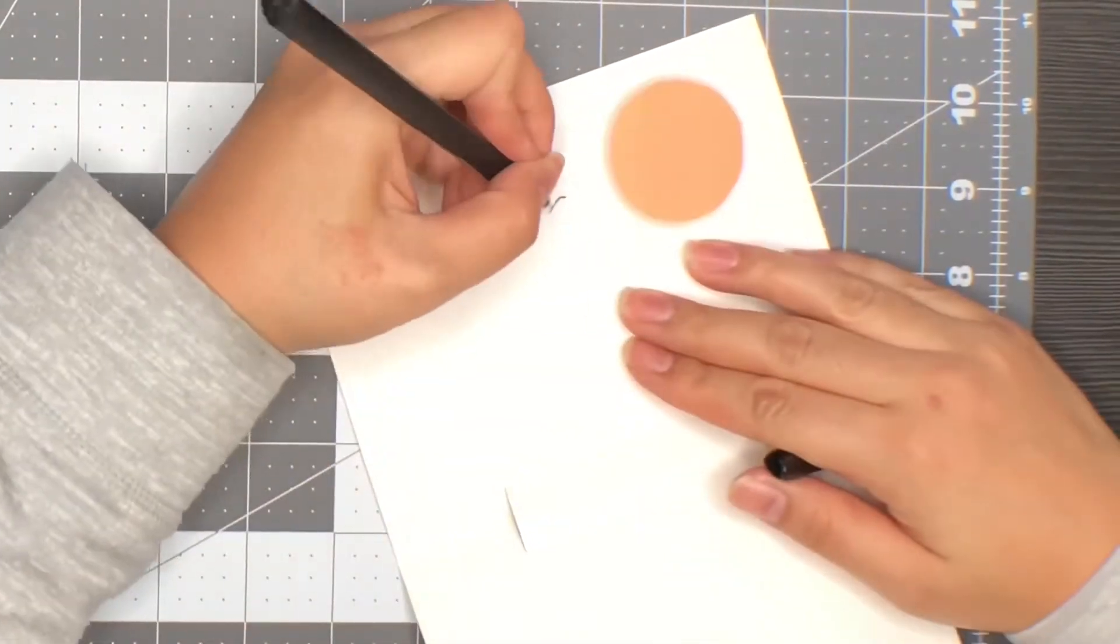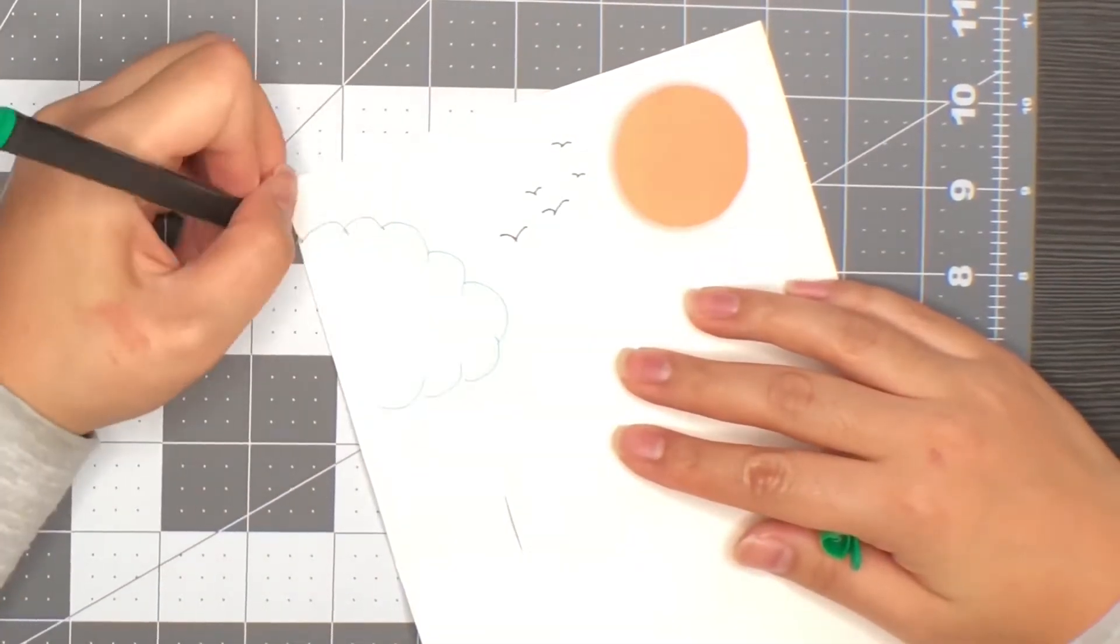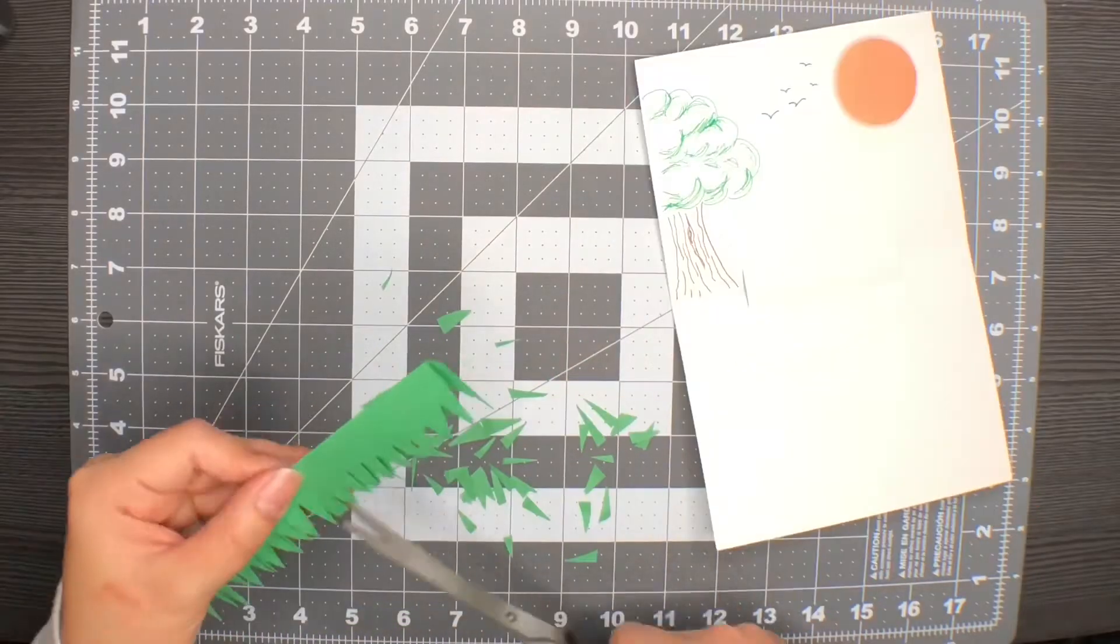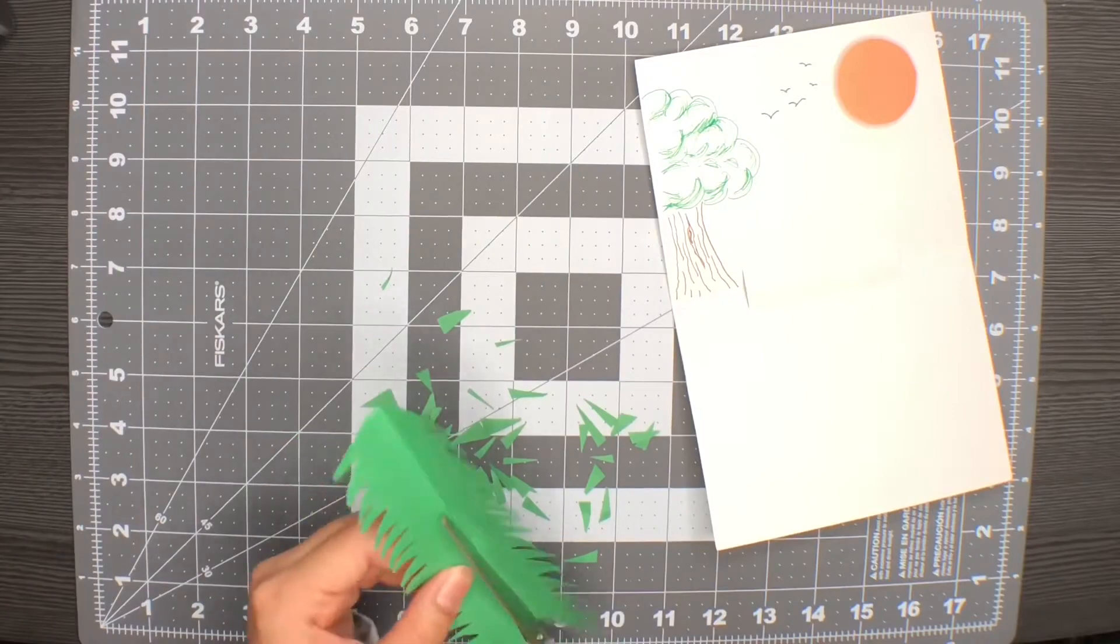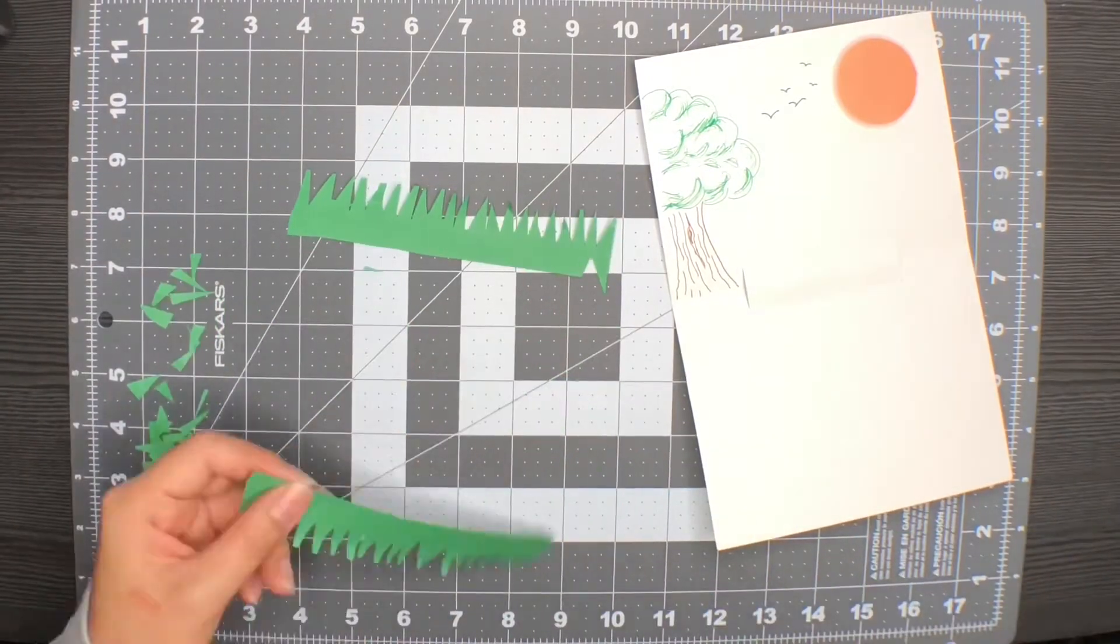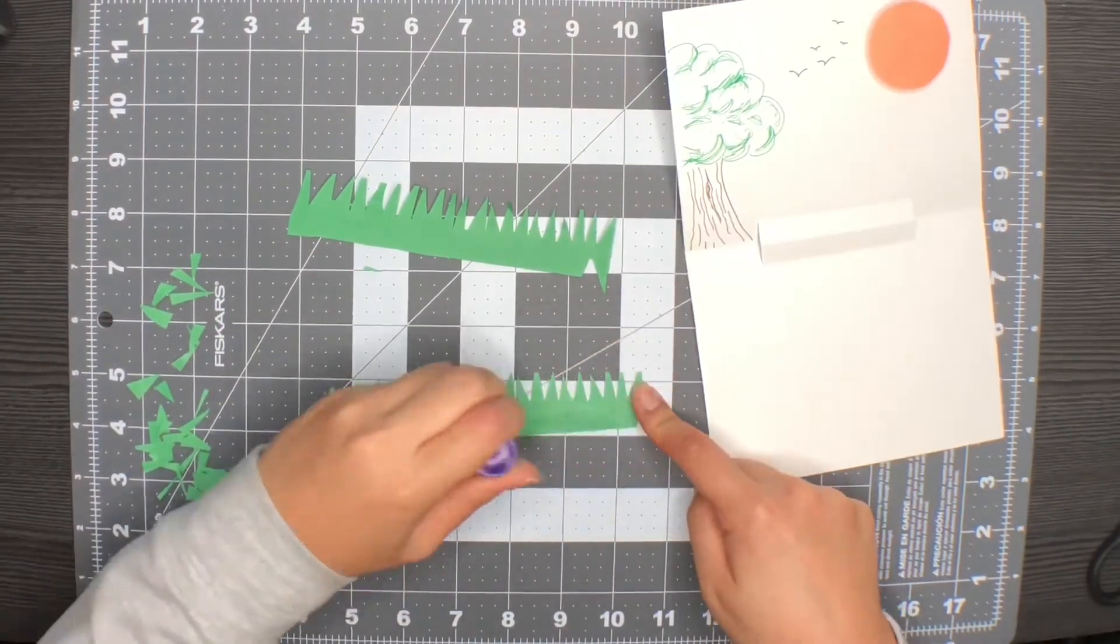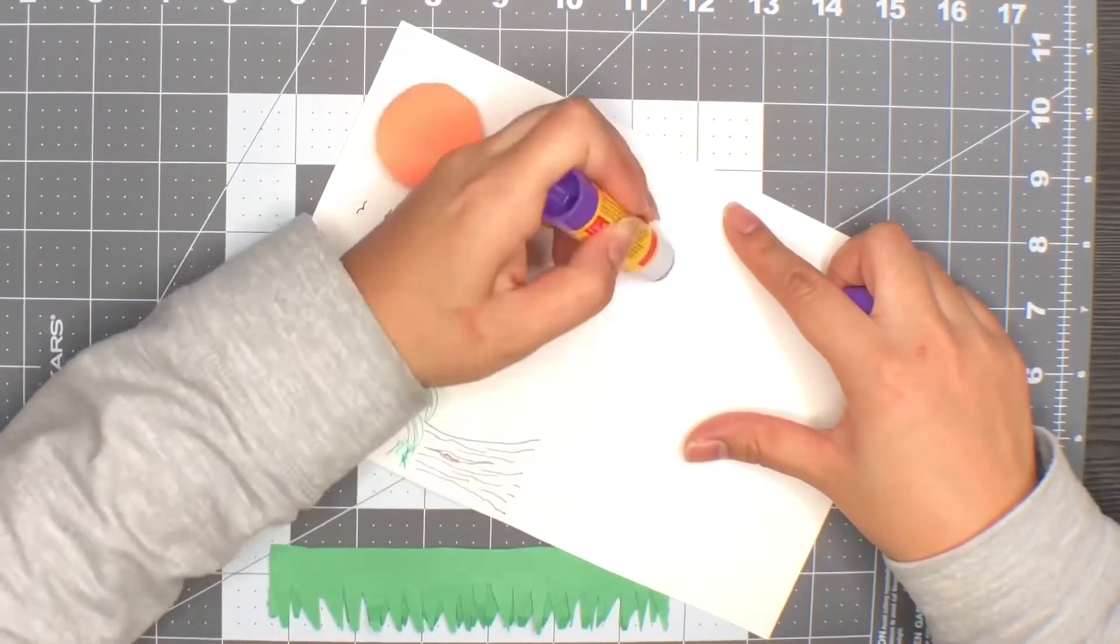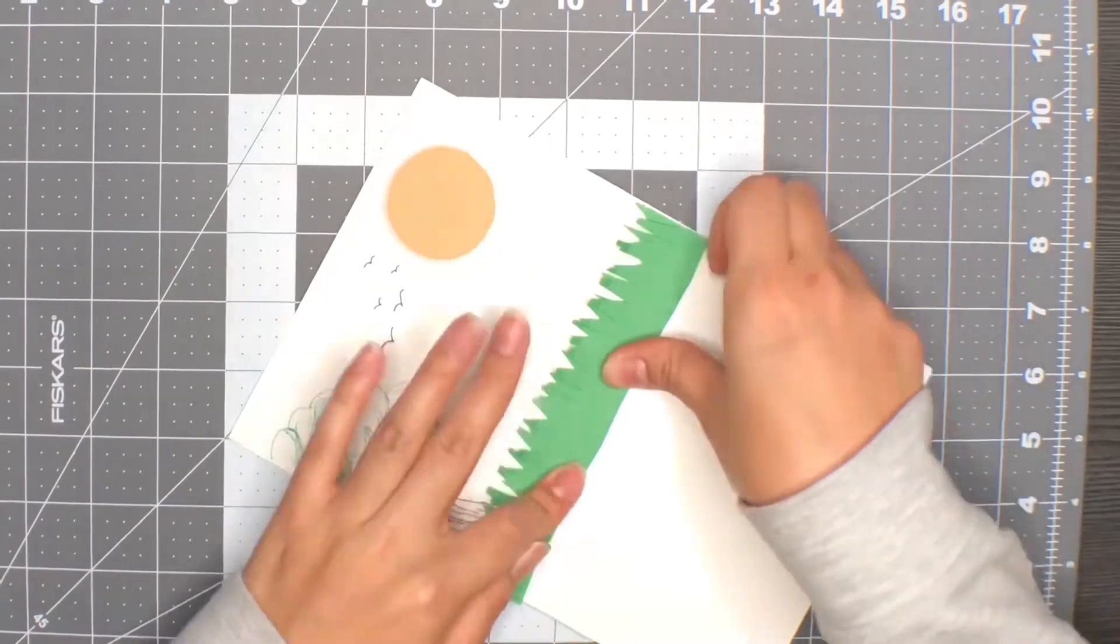And now you can just decorate the background and I'm going to draw some birds and a tree. I folded a green strip of paper lengthwise so I can create two layers of grass. That way it will add some depth. Just like the first card, we're going to glue that to the middle section of the card.